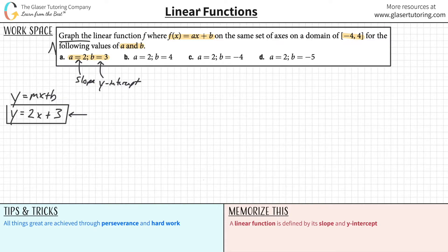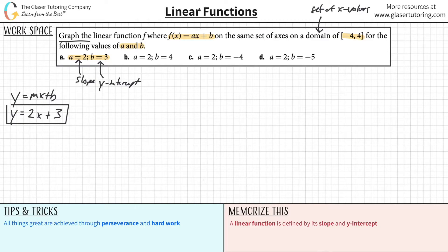The problem is trying to interpret what they're asking. The next thing is we have to graph this on a domain. Remember, domain is simply a set of x values. So we have to graph this on this particular domain. If I create an axis, I know the domain is going to be from negative four to four on the x-axis. This is the x-axis and this is the y-axis.